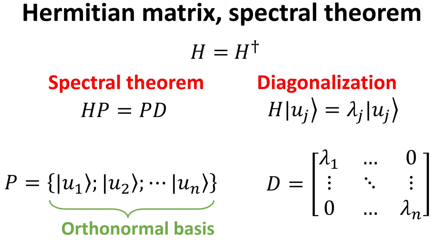The spectral theorem for the Hermitian operator states that there is a unitary matrix P which satisfies the spectral theorem. The matrix P and D can be constructed from the eigenvectors and eigenvalues of the Hermitian operator H, obtained by its diagonalization. The eigenvectors and eigenvalues of H are denoted by u kets and lambda. The matrix P is constructed by concatenating the eigenvector kets, forming an orthonormal basis of the vector space. D is a diagonal matrix whose diagonal elements are the corresponding eigenvalues lambda.